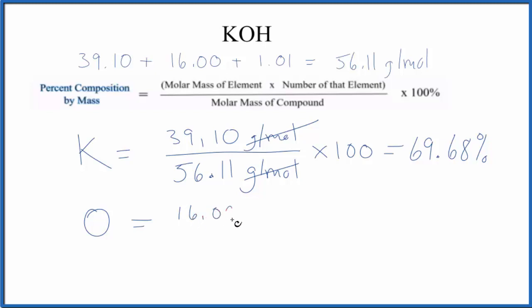Next, we have 16.00. I won't write grams per mole since it cancels out over this number here. Multiply it by 100, and we end up with 28.52%. Then for the hydrogen,